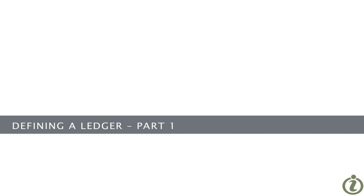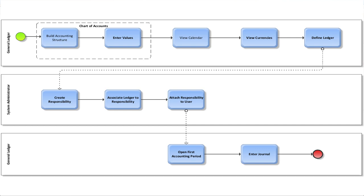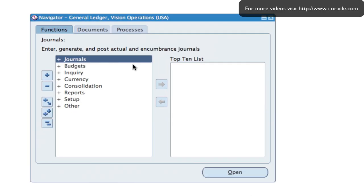In this demonstration we're going to look at how to define a ledger in General Ledger. We'll start off by building our chart of accounts, building the accounting structure, then enter some values into the value sets we've created, view the current calendar, view the currencies, and then define the ledger. You log into Oracle eBusiness Suite and select your General Ledger responsibility.